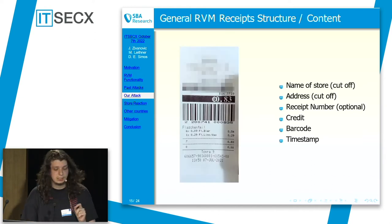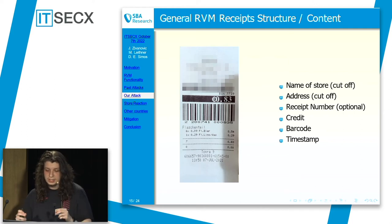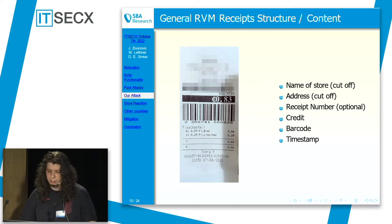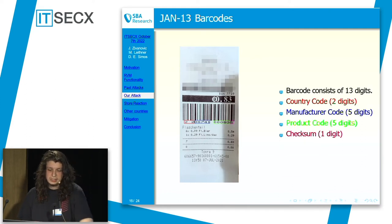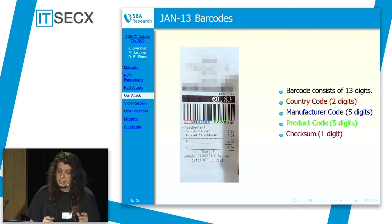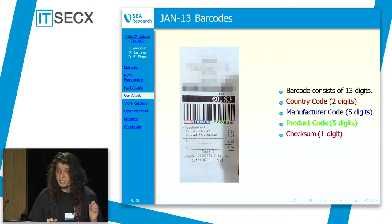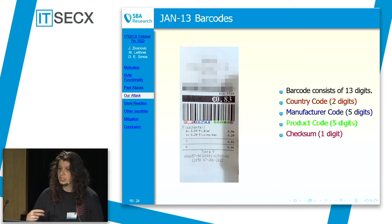If we look at the structure of one of those receipts, we can see it has a name, an address, the receipt number on the top right, the credit amount or money you get, the barcode, and the timestamp. The barcode consists of 13 digits — a JAN-13 barcode — structured as follows: the first two digits represent the country code, the next five digits represent the manufacturer (generally the store), the next five digits represent the product code, and then a checksum for error checking.